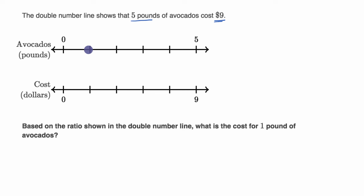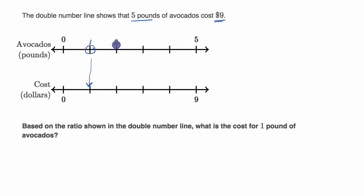If you look at any point over here — say this is one, two, three, four, five — if you look at one, this point on the cost number line would tell you how much one pound of avocado would cost. Two pounds of avocados, how much would that cost? You would look at this second number line right over there.